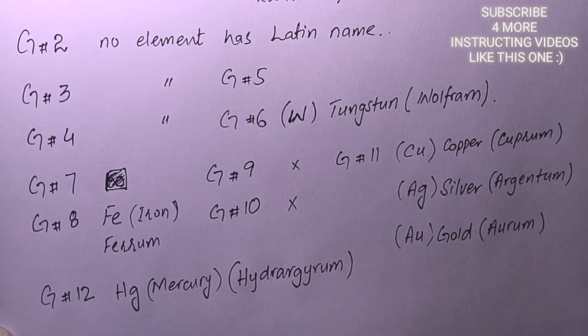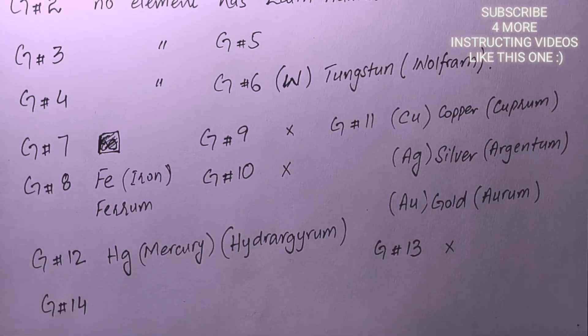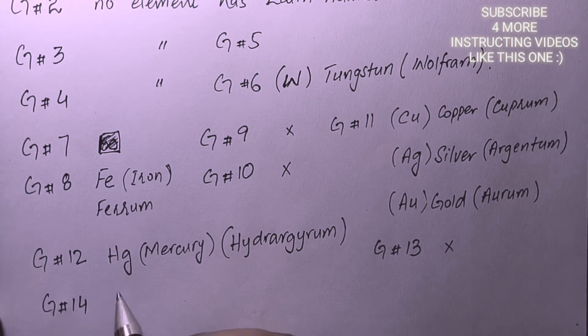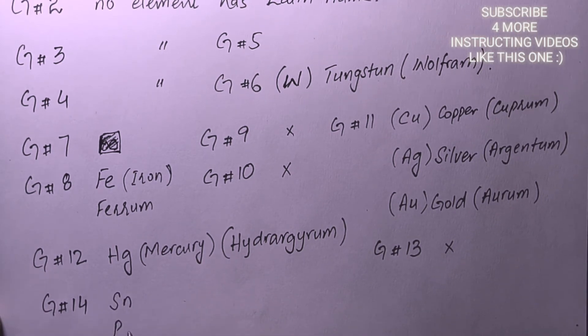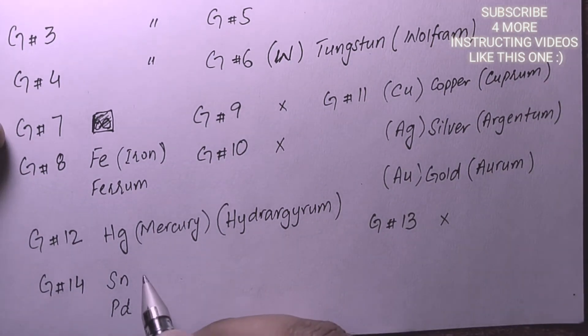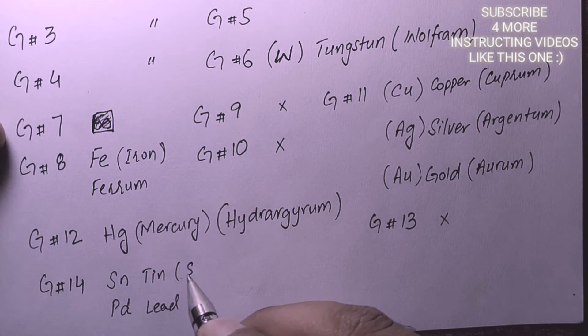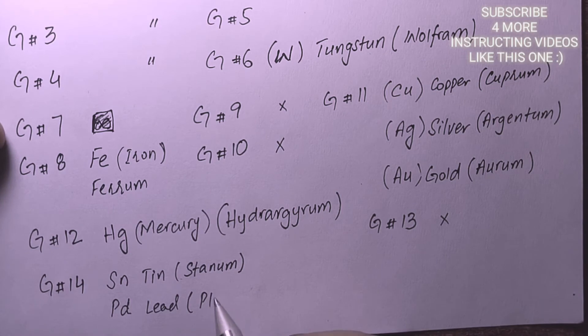Group 13 doesn't have any Latin named element. If we talk about group 14, we have two elements which have Latin names: tin and lead. Tin has the name Stannum, and lead has the name Plumbum.